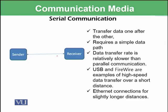In serial communication, we have a sender and a receiver with only one dedicated line. Whatever data is sent from sender to receiver is sent over this single connection — data is transferred one after the other, requiring a simple data path. Data transfer rate is relatively slower than parallel communication. USB and FireWire are examples of high-speed serial data transfer over short distances.